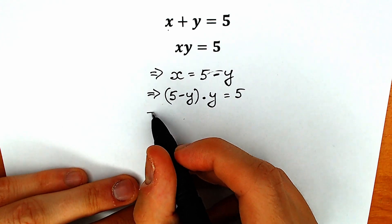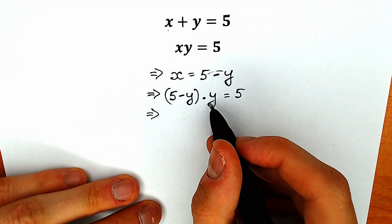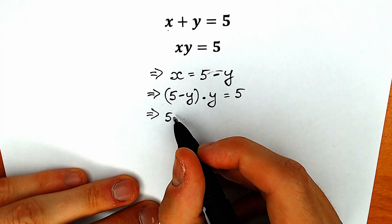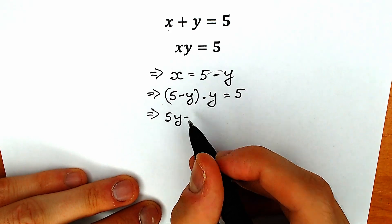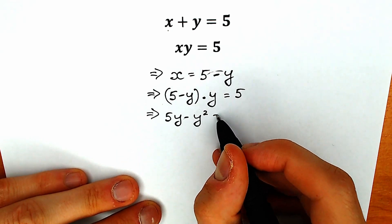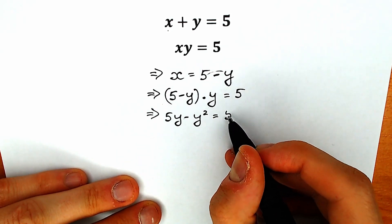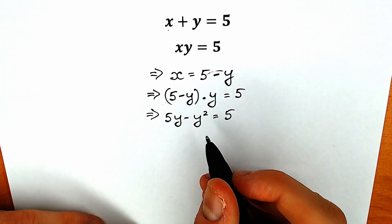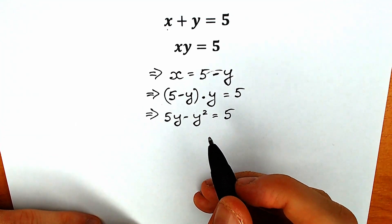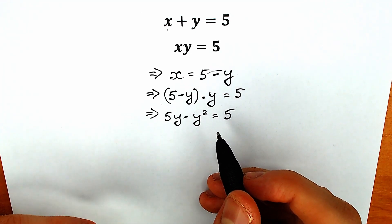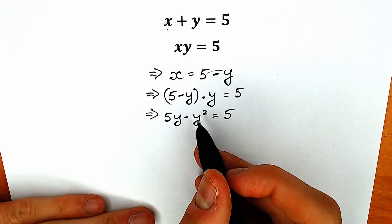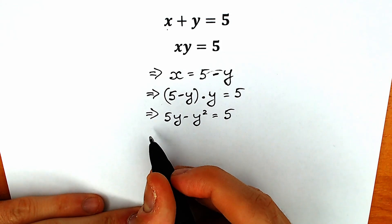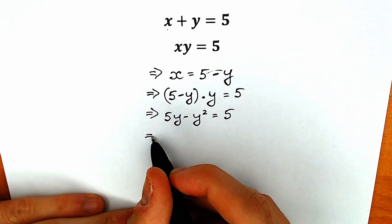Right now let's simplify this a little bit. We just need to multiply y by this parenthesis, so as a result we have 5y minus y squared, equal to 5. It looks like a quadratic equation — we have y squared, we have y, we have a constant, but it's not in the correct order. We prefer the second power term in the first position.